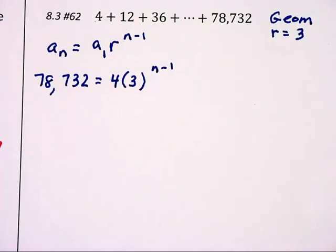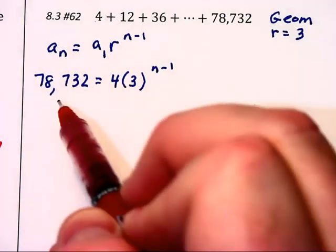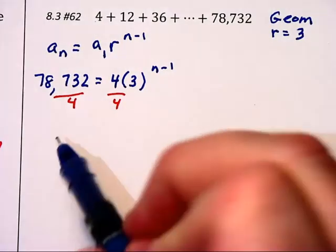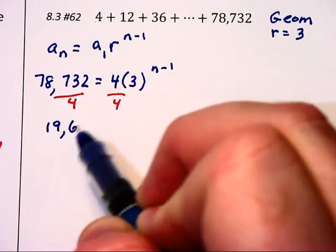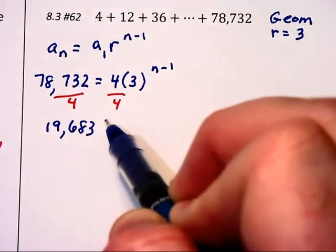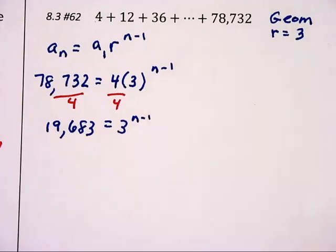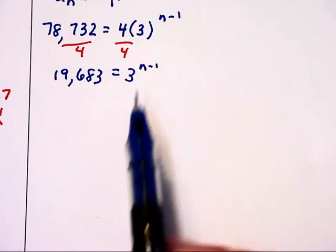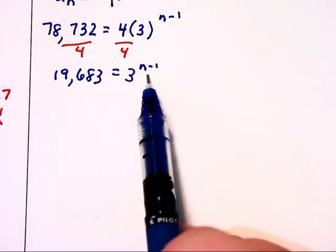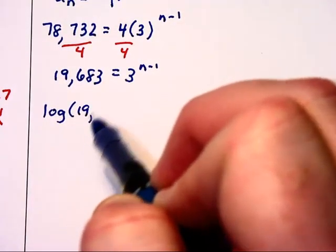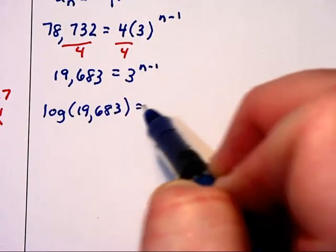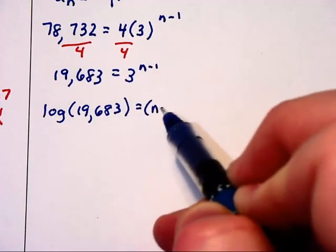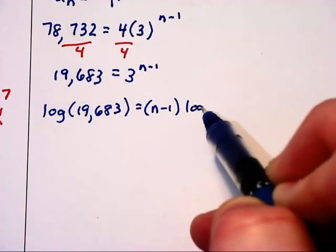Looks like we're going to have to use some logarithms here. I'm going to divide by 4 on each side. This will give us, on the left, 19,683 is equal to 3 to the N minus 1st power. Now, we could take the log of each side. The log of 19,683 is equal to, now the log of the right side brings the N minus 1 down. And we have N minus 1 times the log of 3.